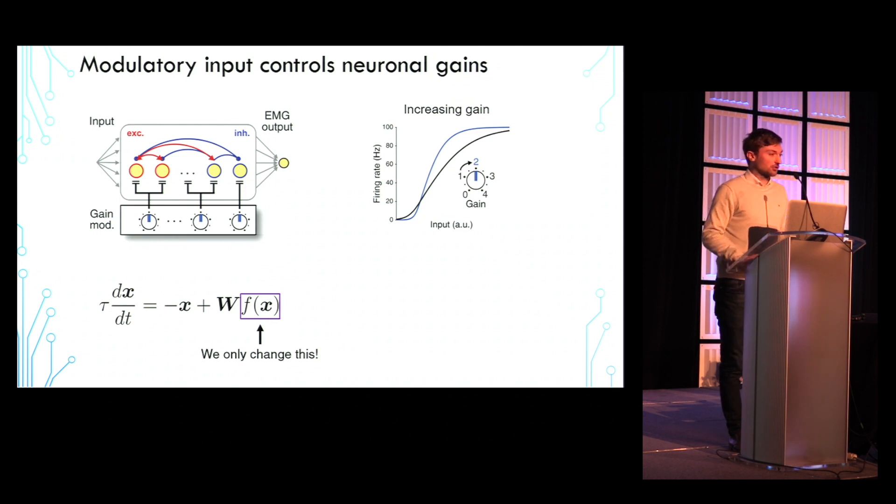So when I talk about gain modulation, you'll have to put to one side the definition of gain that Evan just mentioned, at least for the next 10 minutes. When I talk about gain modulation, I mean changing the slope of the gain function for the neurons in the recurrent network, as plotted here.